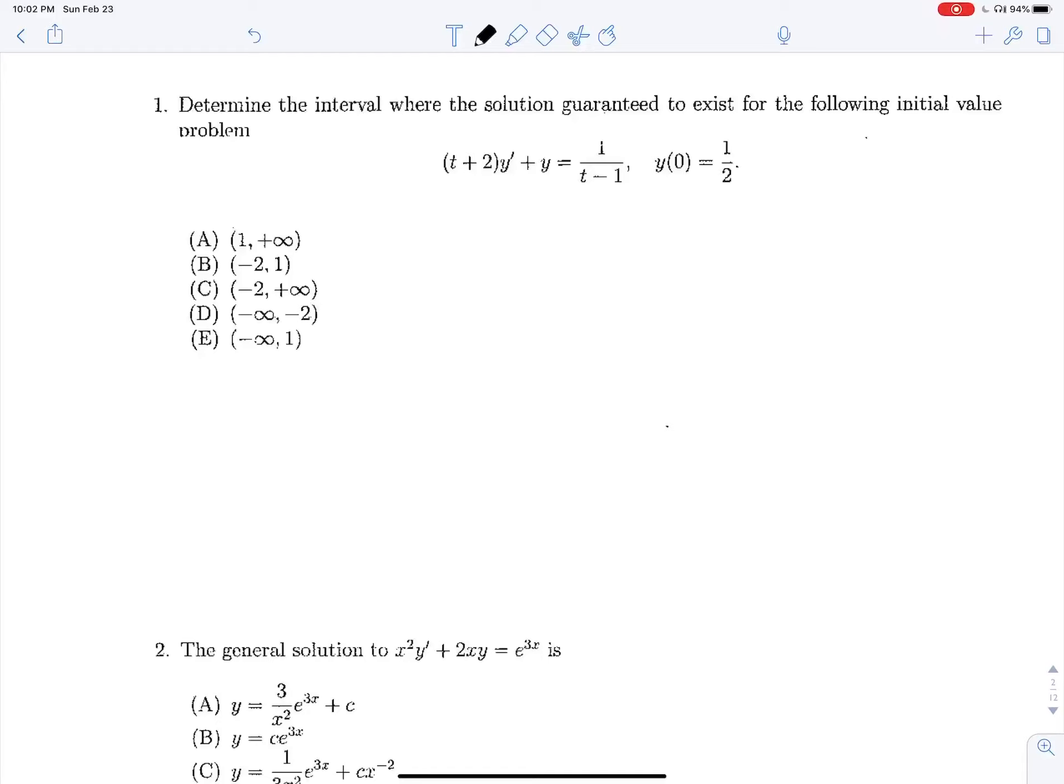So let's determine the interval where the solution is guaranteed to exist for the following initial value problem given here. So we know that the existence of uniqueness theorem says that if we have an equation in the form of y prime plus p of x, y equals q of x, we're guaranteed to have a value that our solution is guaranteed to have a value for any rectangle where p of x and q of x are both defined.